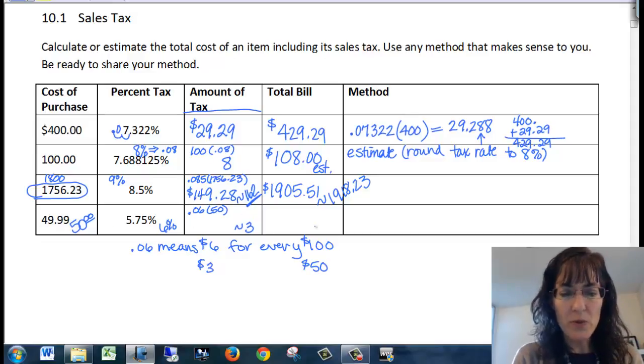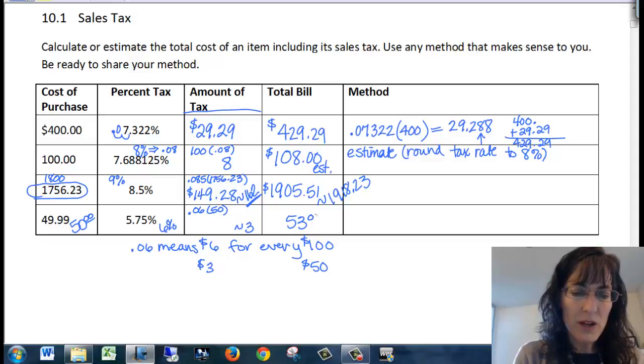So 50 and 3, that's going to give me $53 for my approximation for the total bill.